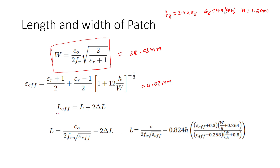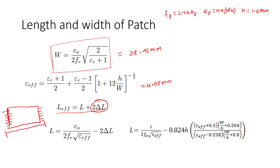For the effective length, we have a term called 2ΔL. For a rectangular patch antenna, there are fringe fields along the width of the antenna. These fringe fields also contribute to the length of the antenna — the total is called L_effective. The actual physical length is smaller; ΔL is added to both sides, resulting in 2ΔL total.